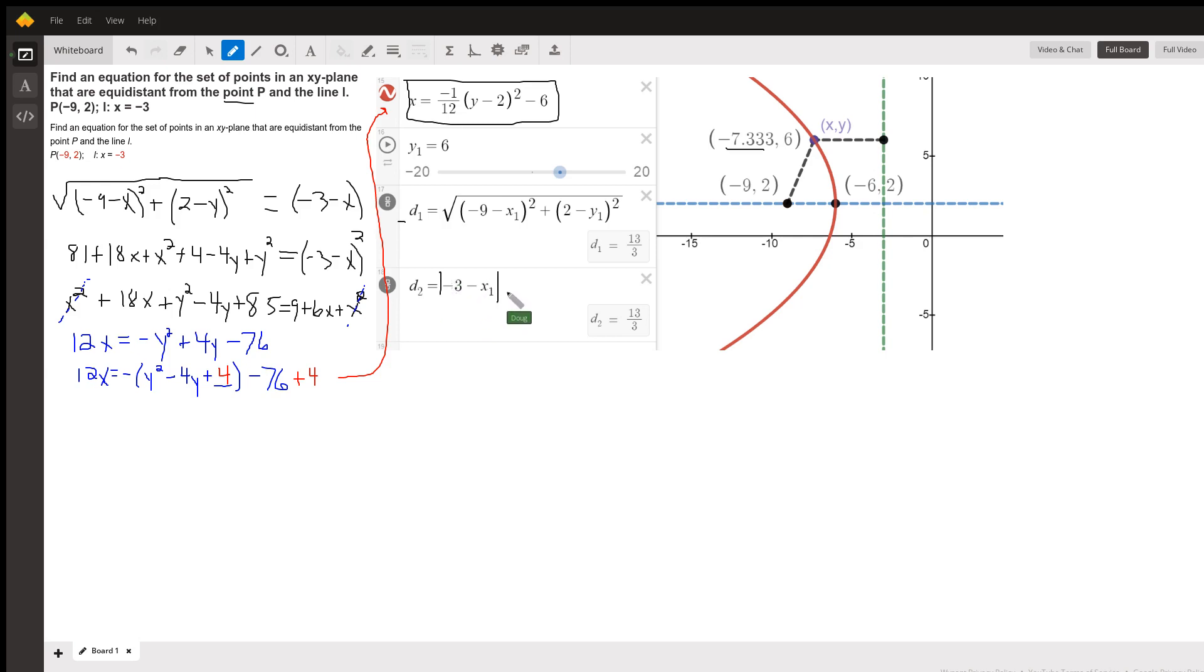In order to find the set of all points in the xy-plane that satisfy the fact that d sub 1 equals d sub 2, we could set them equal to each other, manipulate the equation, and see if we can end up with this. So here we go.